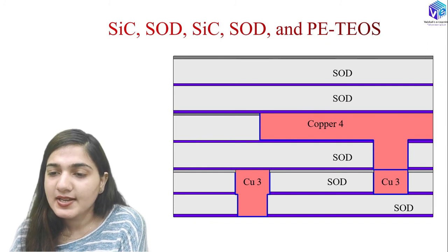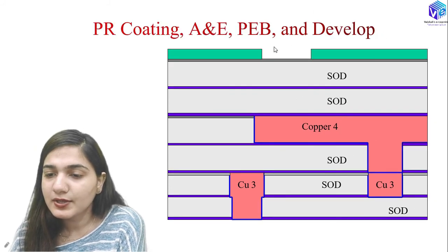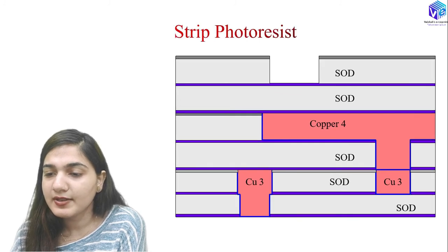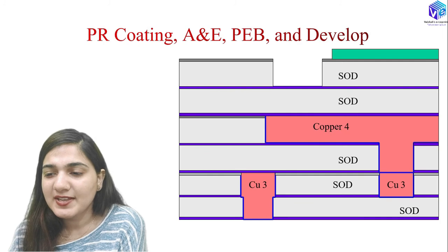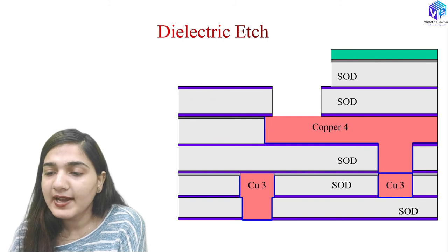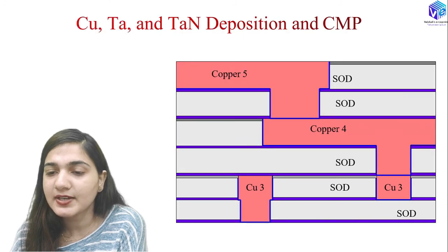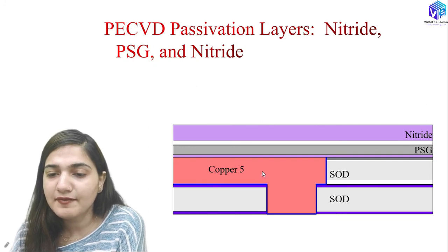Silicon carbide, SOD, and PE-TEOS deposition are again repeated. Photoresist coating, alignment and exposure, PEB, and development are done; via-5 is etched and the photoresist is stripped. After another round of photoresist coating, alignment, exposure, PEB, development, dielectric etching, and photoresist stripping, hydrogen plasma cleaning and copper/tantalum/tantalum nitride deposition with CMP complete the fifth copper metallization layer.